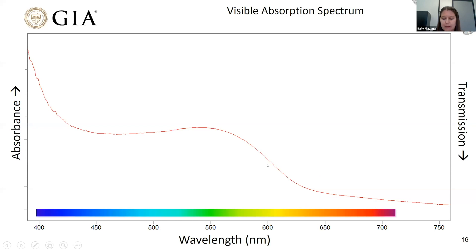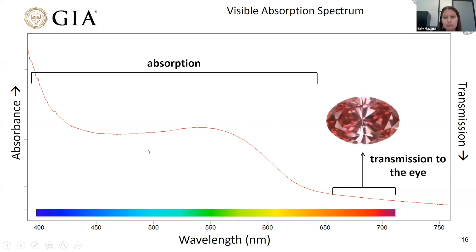To understand absorption spectra: on the x-axis we show wavelength — all colors from 400 to 700 nanometers. On the y-axis, going up represents absorbance and going down represents transmittance. To read which defects are causing absorption, read the peaks. To see what color the stone is, read the valleys — the transmission windows. In this particular stone, we have absorption from the blue all the way up near the red, then a transmission window within the red — and that creates a vibrant pink stone.